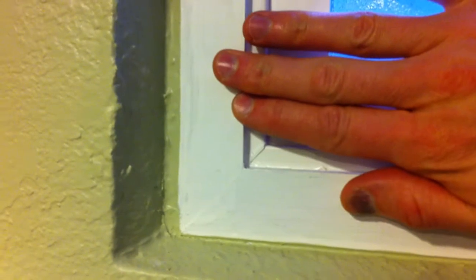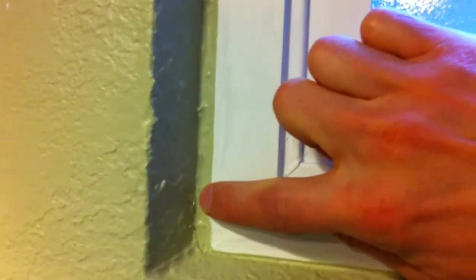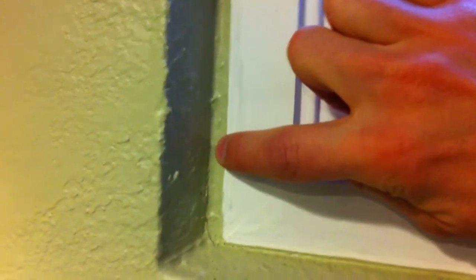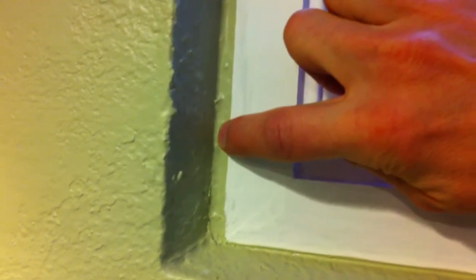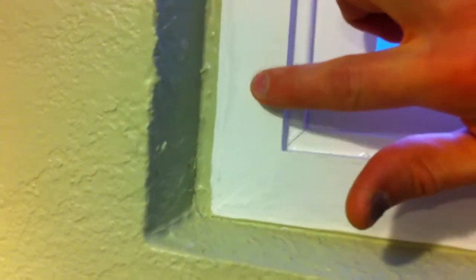And then once that was dry, I went in and filled in. I used a little bit more spray foam just to kind of make it even with this. And I taped it as well again. And then I cut it.